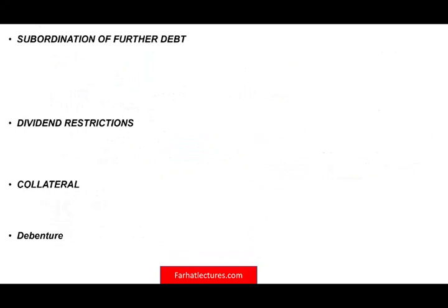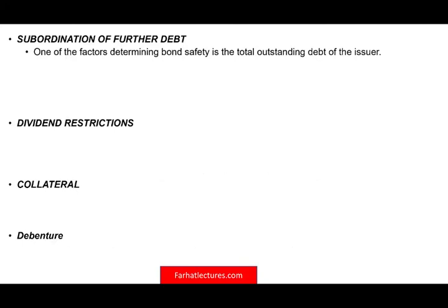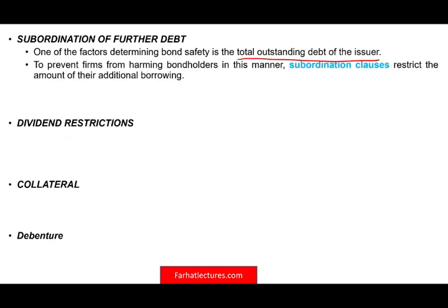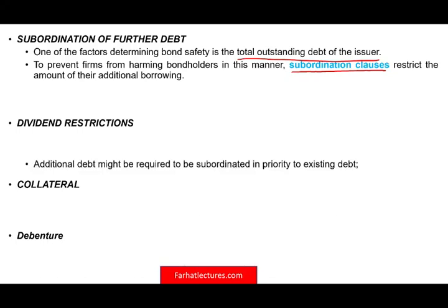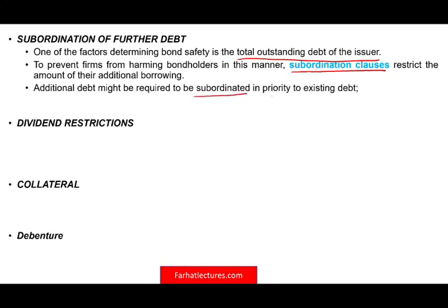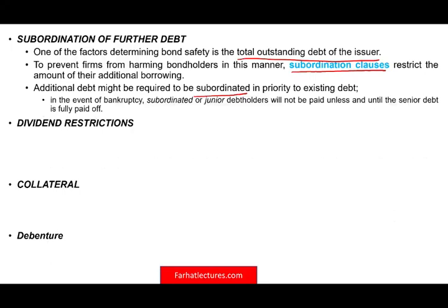Regarding subordinated or junior debt: one factor determining credit risk is how much debt a company has. To prevent firms from harming existing bondholders, subordination clauses restrict additional borrowing. Additional debt might be subordinated in priority to existing debt — meaning in the event of bankruptcy, subordinated or junior debt holders will not be paid unless senior debt holders are paid in full.